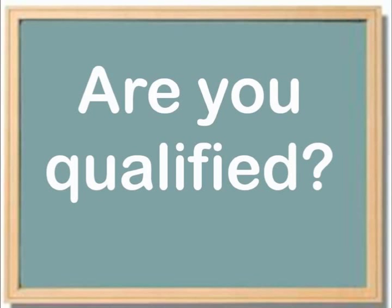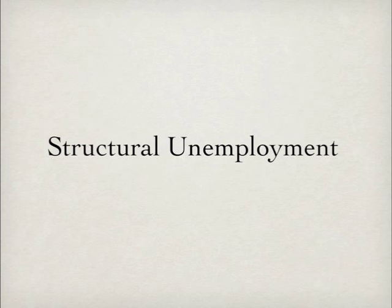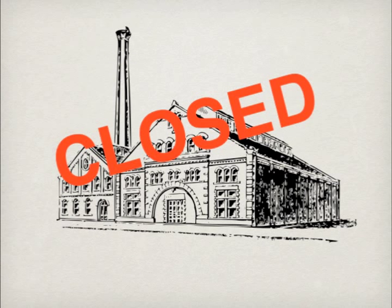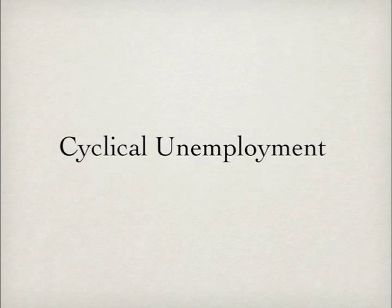A high school graduate lacks the skills necessary for a particular job — this would be structural unemployment. Unemployed workers are laid off when the local manufacturing plant closes because the product made there isn't selling — this would be cyclical unemployment.